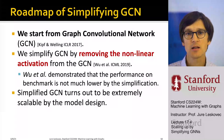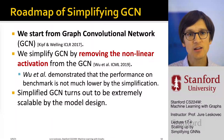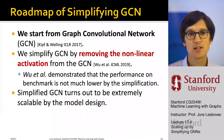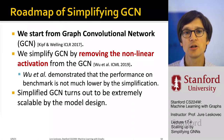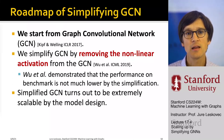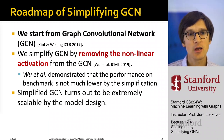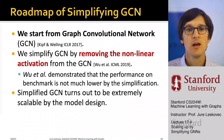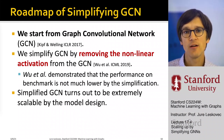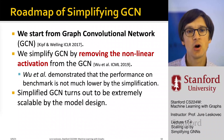Here is how we are going to do this. We will start from a graph convolutional network as an example architecture, and we are going to simplify it by removing the nonlinear activation from the GCN. There's been a paper about a year and a half ago that demonstrates that the performance on benchmarks is not too much lower because you have removed the nonlinearity.